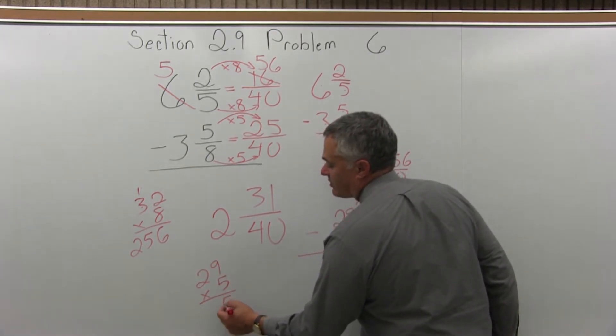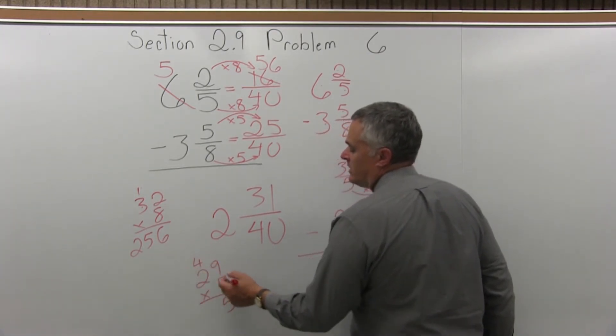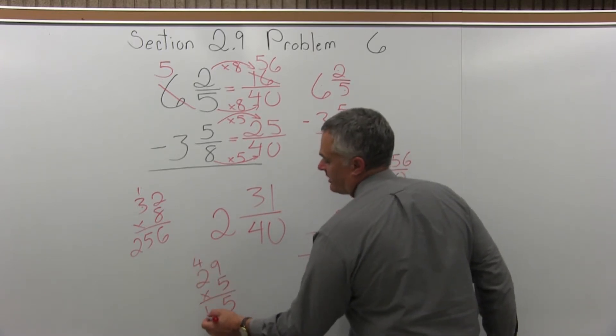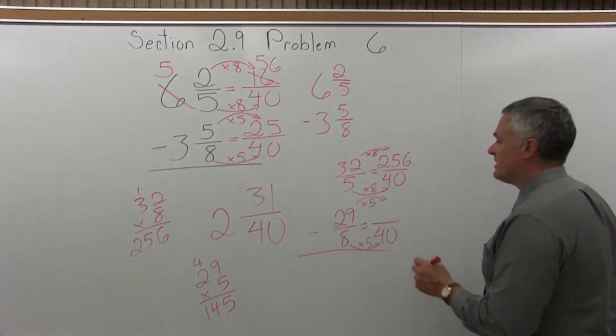29 times 5. 5 times 9 is 45, put the 5, carry the 4. 5 times 2 is 10, 10 plus the 4 that you carried, 10 plus 4 is 14. So that makes 145.